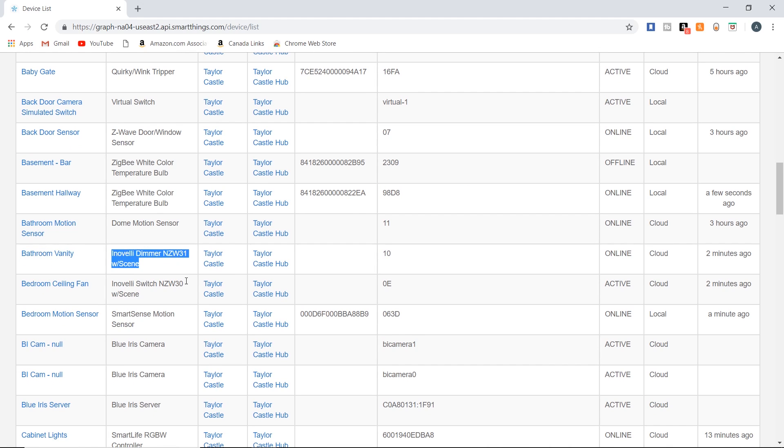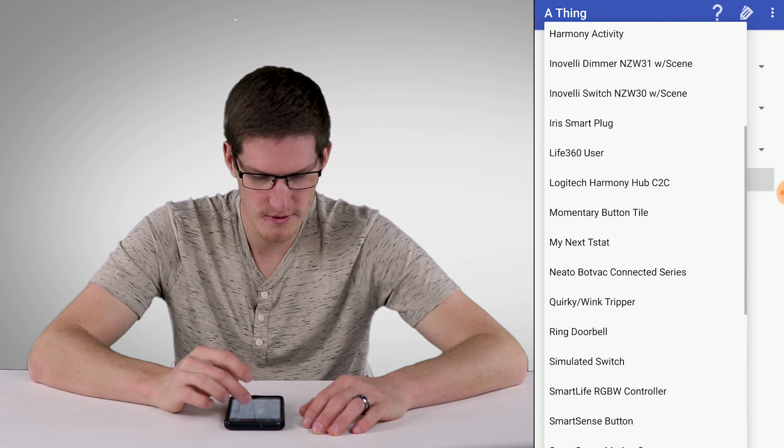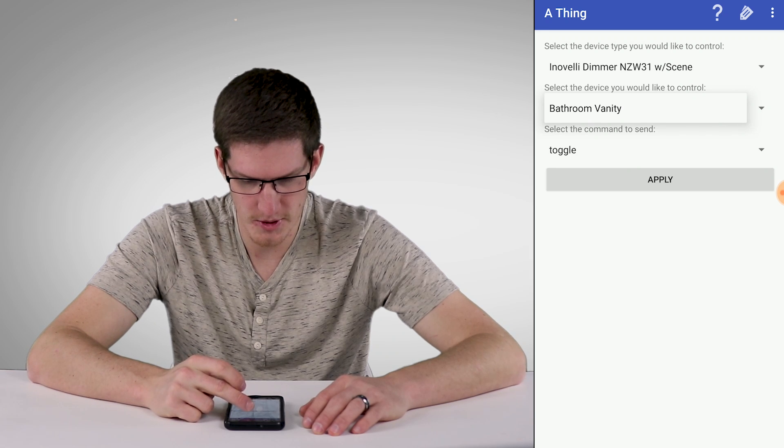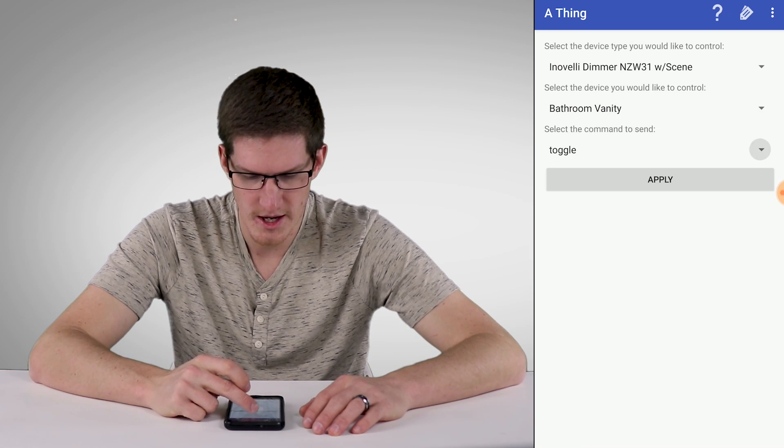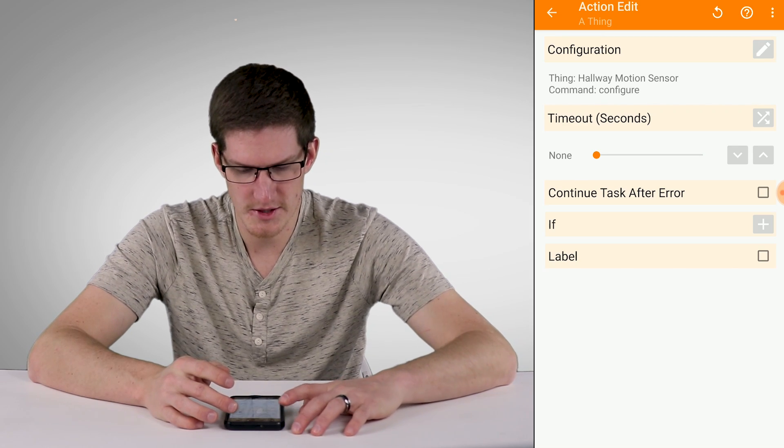So just as an example, we can use the bathroom dimmer, which I know is an InnoValley dimmer. And I only have one of those set up right now, so bathroom vanity. And we want to toggle that on and off. So that's just an example. Now that's set up as a thing.